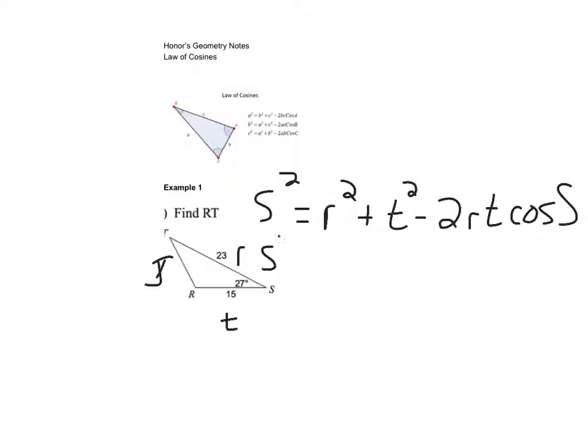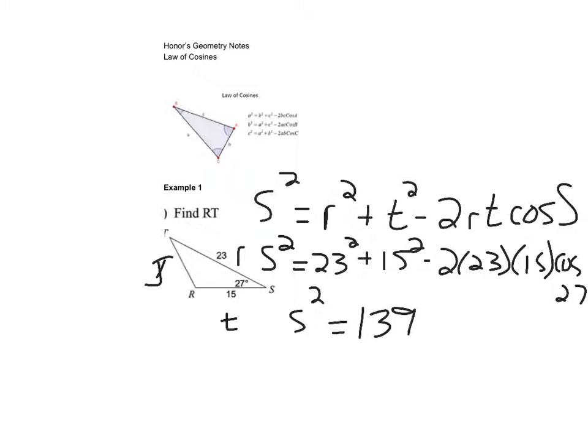So substitute on your side. All right, so I'll have s squared equals 23 squared plus 15 squared minus 2 times 23 times 15 times the cosine of 27. So, and then we just have to simplify this. So I have 23 squared plus 15 squared minus 2 times 23 times 15 and then cosine of 27.